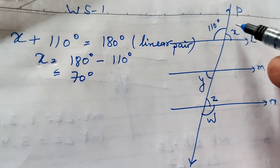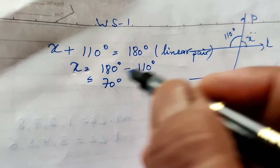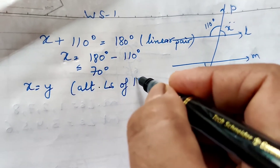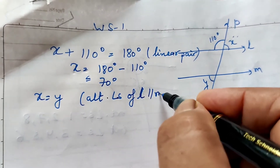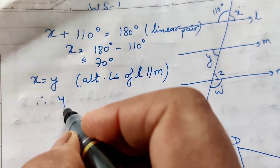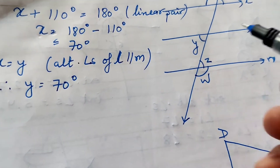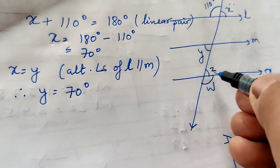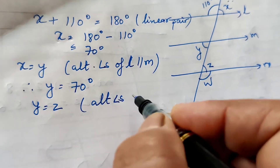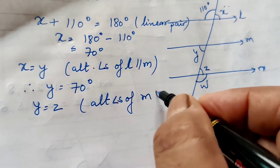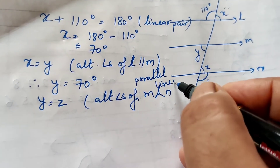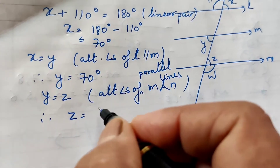X and Y are alternate angles because lines L and M are parallel. So X equals Y, and therefore Y equals 70 degrees. Then Y and Z are also alternate angles because lines M and N are parallel. So Y equals Z, and Z equals 70 degrees. For W, we can use exterior alternate angles with 110 or use linear pair — W is also determined from the parallel line properties.